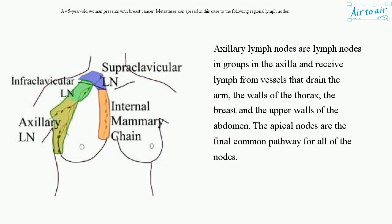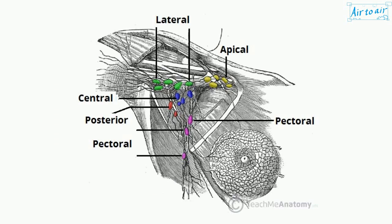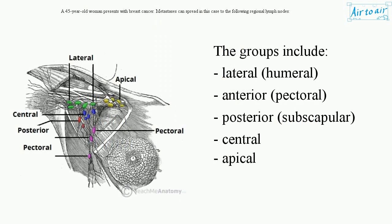Axillary lymph nodes are lymph nodes grouped in the axilla and receive lymph from vessels that drain the arm, the walls of the thorax, the breast, and the upper walls of the abdomen. The apical nodes are the final common pathway for all of the nodes. The groups include lateral, humeral, anterior, pectoral, posterior, subscapular, central, and apical.